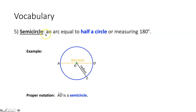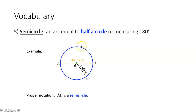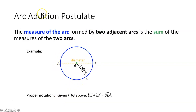A semicircle is an arc equal to half of a circle, or measuring 180 degrees. Again, there are 360 degrees in a circle, meaning that half of that must be 180. So if you ever have an arc measuring 180 degrees, that would be considered a semicircle. In this particular instance, that would be arc AD.